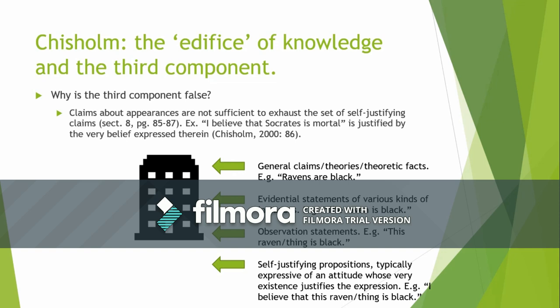Why? Because in order for that statement to be true, one would have to actually believe what they say they believe. And then, if that's true, then they believe that they believe that Socrates is mortal. It's true that they believe that Socrates is mortal, and their having that very belief justifies their claim that they believe. So you can get a kind of JTB reading out of what Chisholm says.